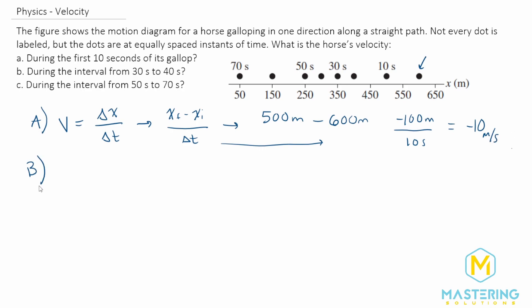Now in part B, they want us to find the velocity for the horse from seconds 30 to 40. The way they've labeled this picture is confusing to try to make the problem more challenging because they didn't label the 40 seconds. They're hoping that you'll just jump to the 50 seconds here.